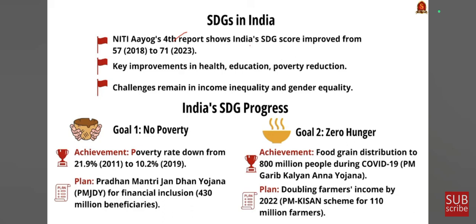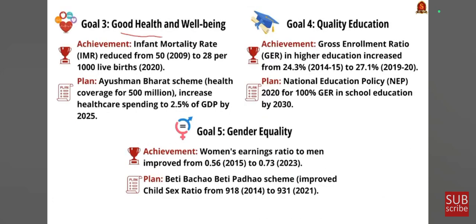Goal 2 — zero hunger: the major achievement has been food grain distribution to 800 million people during COVID-19, and schemes like PM Kisan have aided India's progress. Goal 3 — good health and well-being: infant mortality rate has considerably reduced from 50 in 2009 to 28 per thousand live births in 2020, with Ayushman Bharat being a guiding factor. Goal 4 — quality education: gross enrollment ratio in higher education increased from 24.3% in 2014 to 27.1% in 2019–20, aided by the National Education Policy 2020. Goal 5 — gender equality: women's earning ratio to men improved from 0.56 in 2015 to 0.73 in 2023; schemes like Beti Bachao Beti Padhao have been significant.